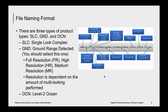The file name contains important information about the characteristics of the file and is very long. It gives you information about whether it was obtained by Sentinel-1A or 1B, the swath type, product type, polarization, day and time of acquisition, orbit number, and file extension — that's why it's so long.